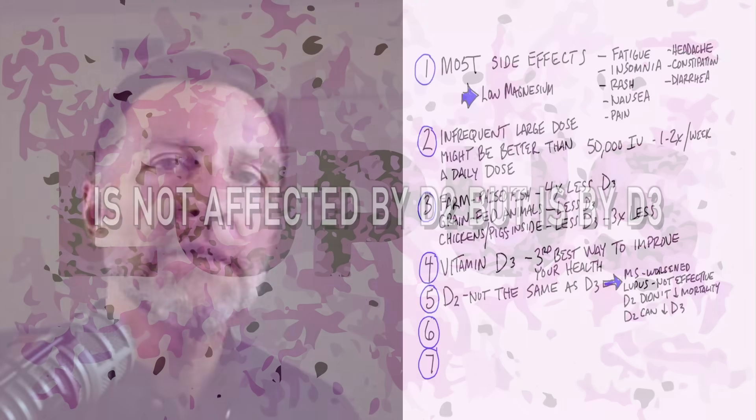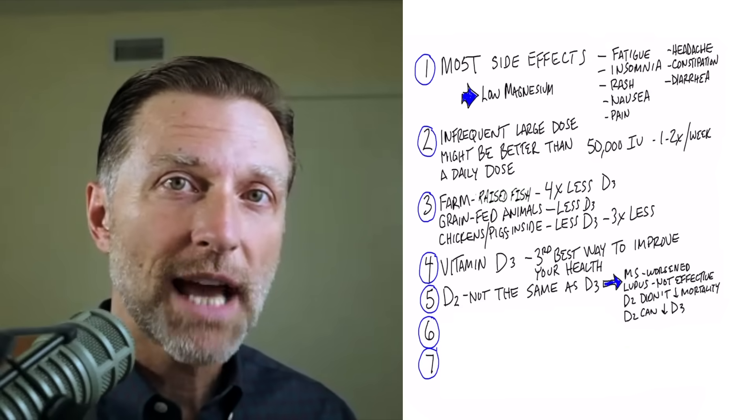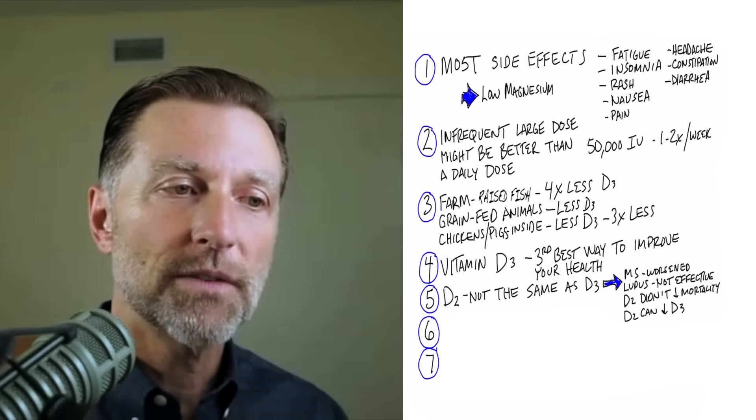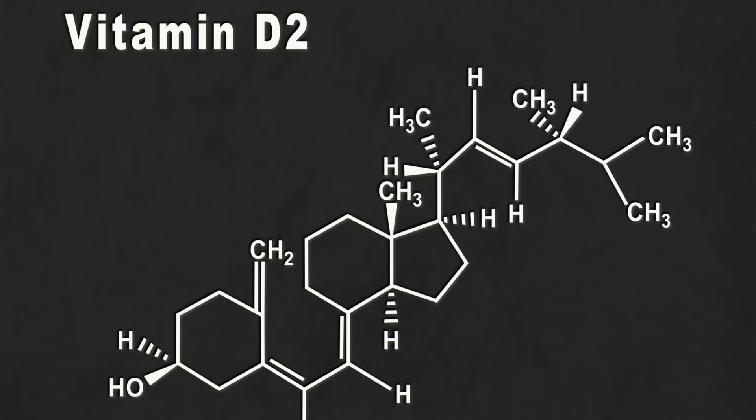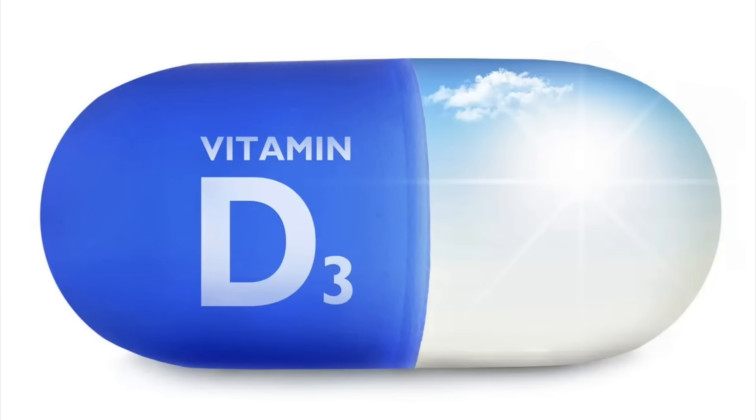Lupus, another autoimmune disease, is not affected by D2, but it is with D3. The studies in vitamin D2 do not decrease mortality, but the studies with vitamin D3 do. And taking vitamin D2 can actually inhibit the absorption of vitamin D3.